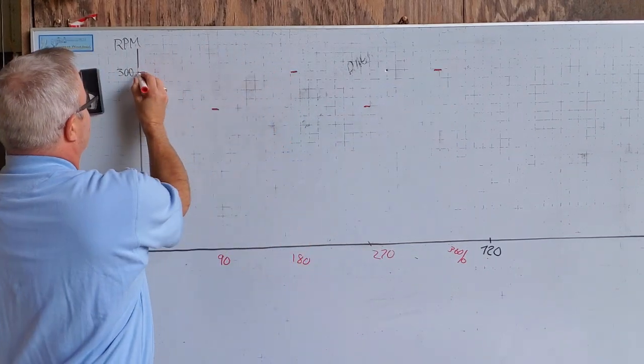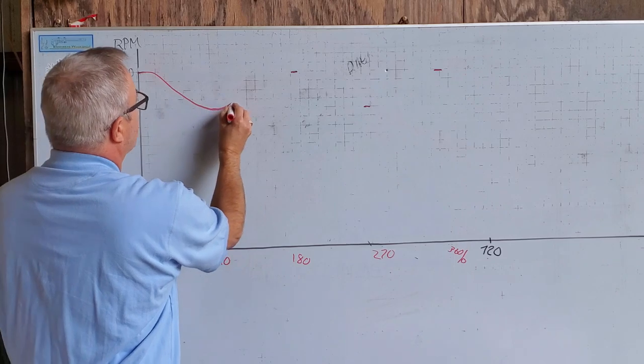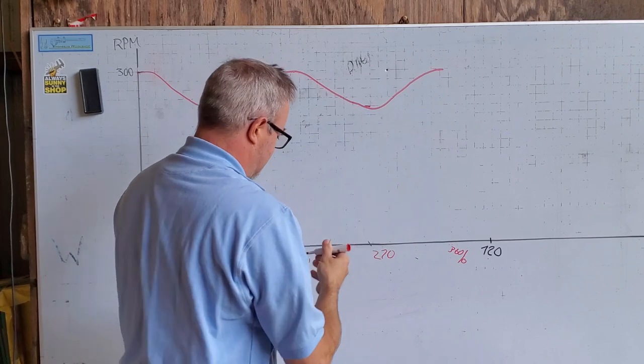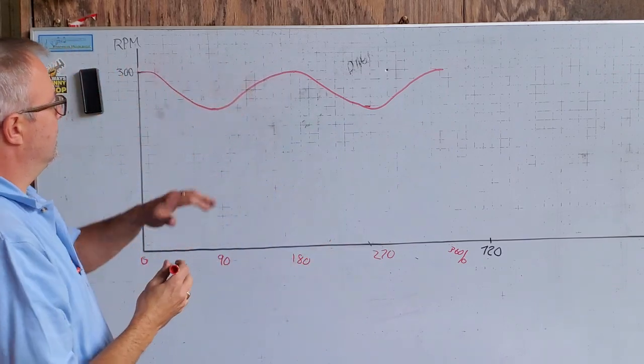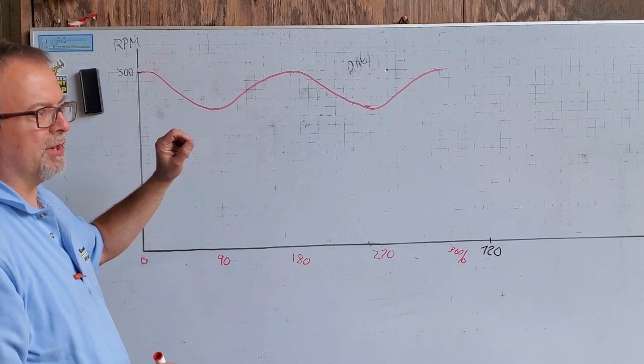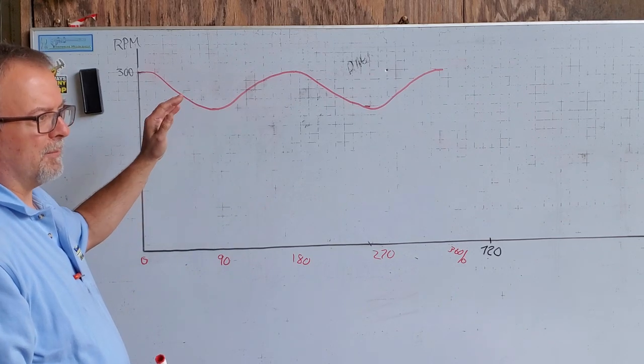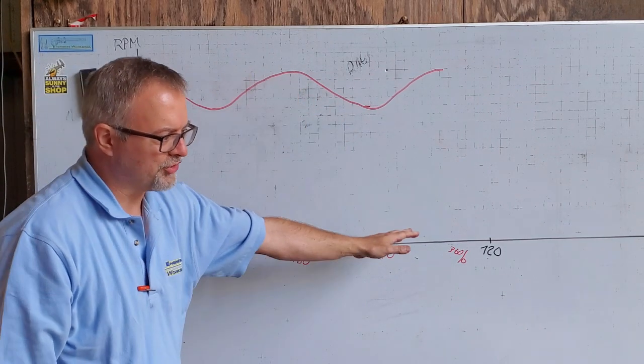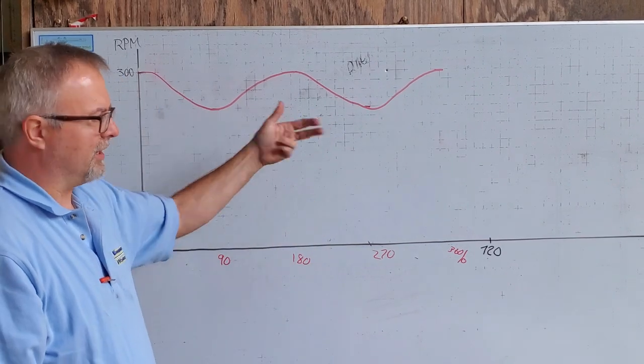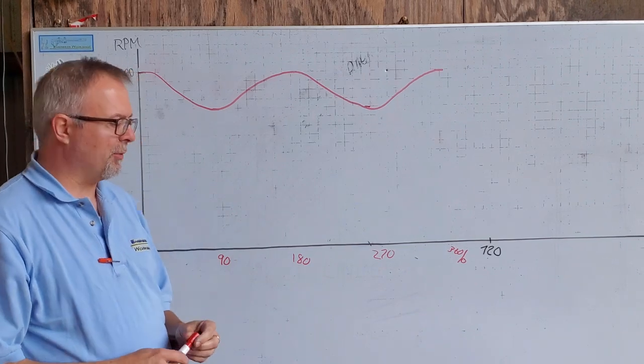So that RPM of that flywheel is doing this. And this fluctuation in speed is superimposed on top of the one that is just the friction of the coast down and the emission of power at either end of the stroke. So a lot of complex things going on with the flywheel.